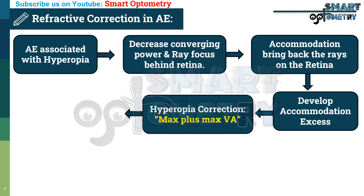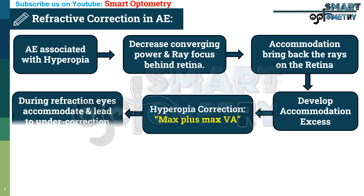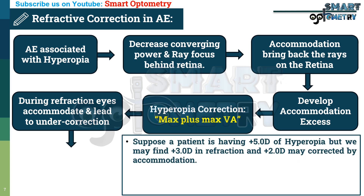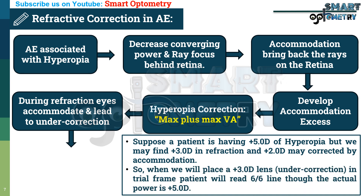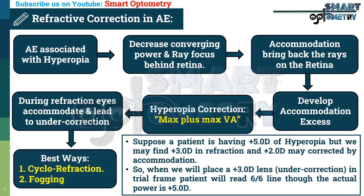To correct hyperopia, we can follow maximum plus for maximum vision. But remember, in hyperopia, the eye accommodates for both near and distance. That means when we are doing refraction of a hyperopic patient, accommodation is already activated, so some amount of hyperopia is already corrected by accommodation during refraction. For example, a patient having +5 diopters of hyperopia may show only +3 diopters on refraction, with +2 diopters corrected by accommodation. When we place a +3 diopter lens in the trial frame, the patient will read the 6/6 line even though the actual power is +5 diopters. Thus, in accommodation excess, it is always better to do cycloplegic refraction or fogging for the final prescription.